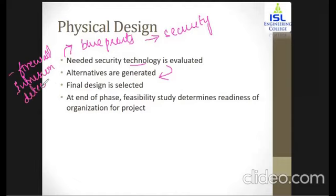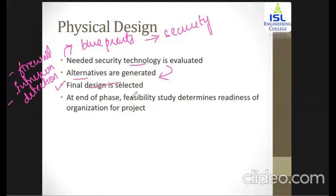An intrusion detection system sends a message across different servers if any person tries to unauthorizedly access your system. When you know someone has accessed the system, you identify how to safeguard the files. When you have different alternatives, you finalize a perfect design to implement. At the end of this phase, you conduct a feasibility study to identify whether the organization is completely ready to develop the software.